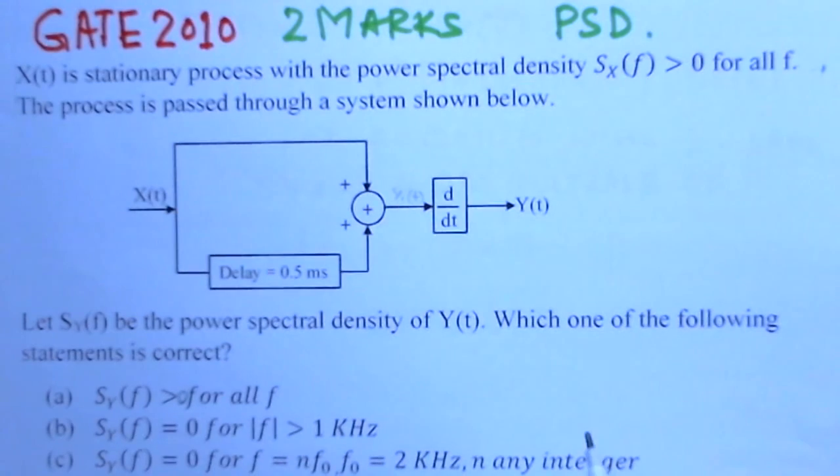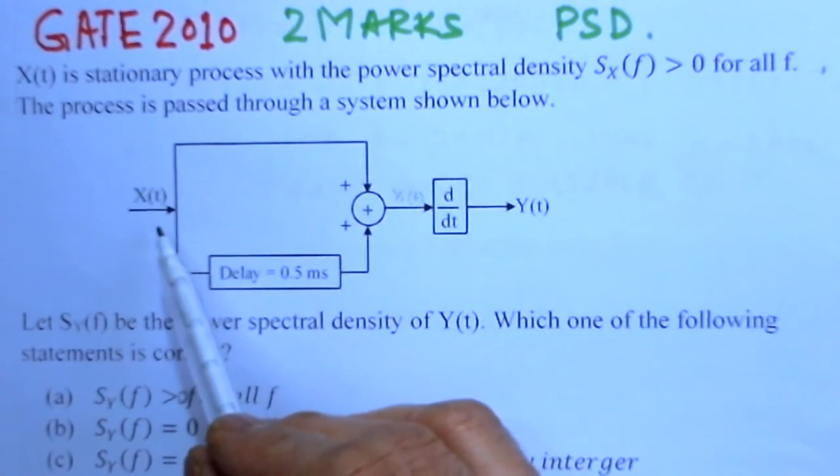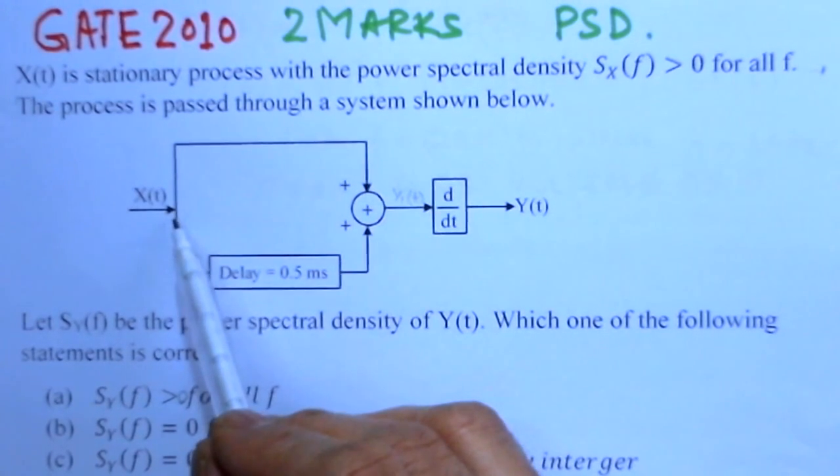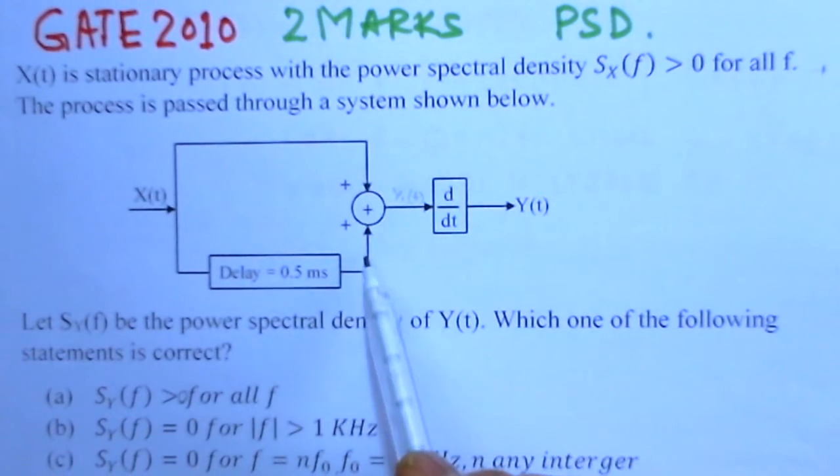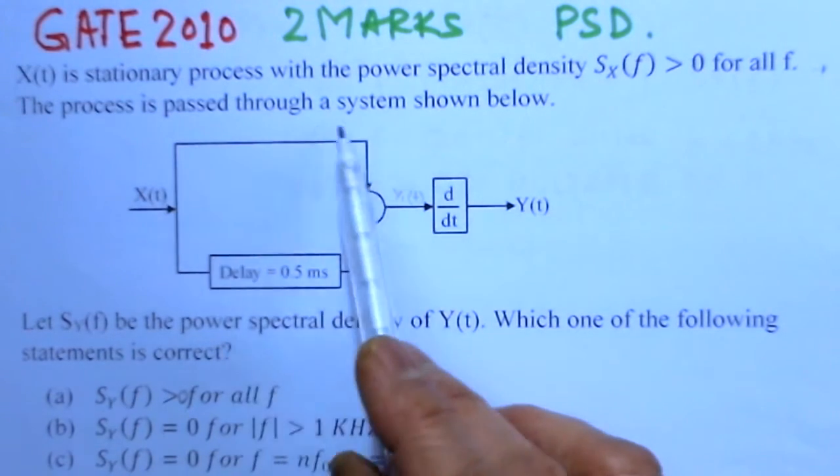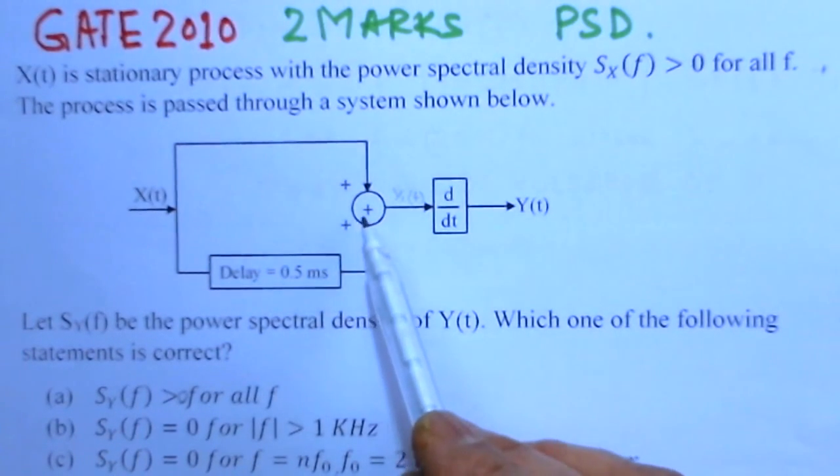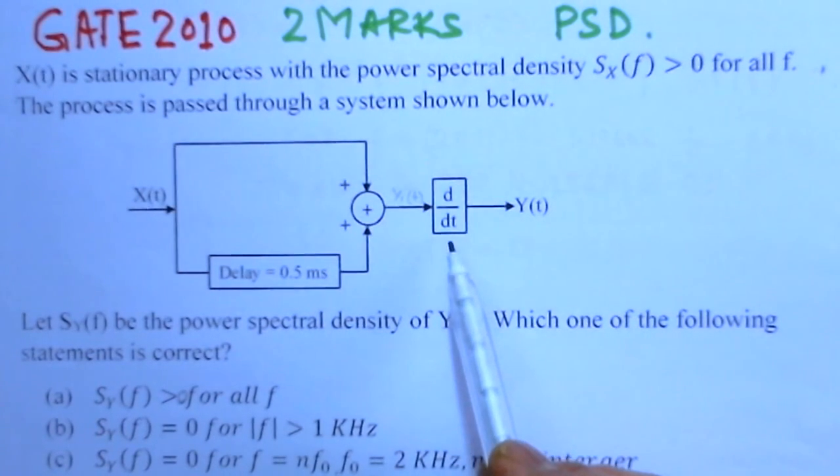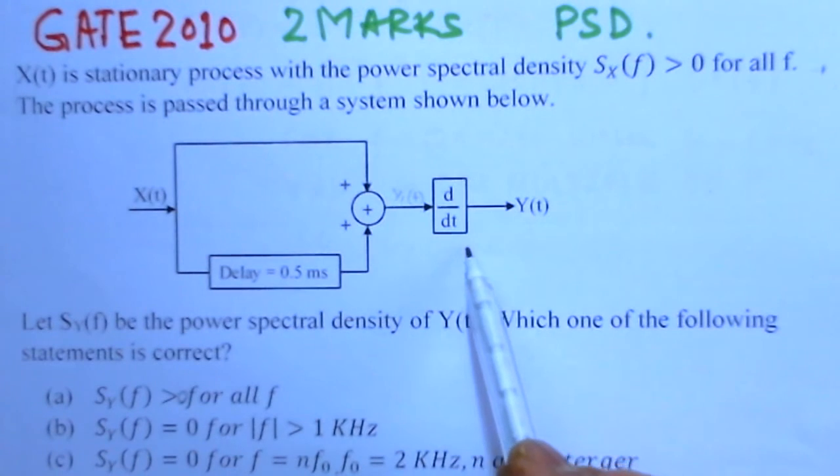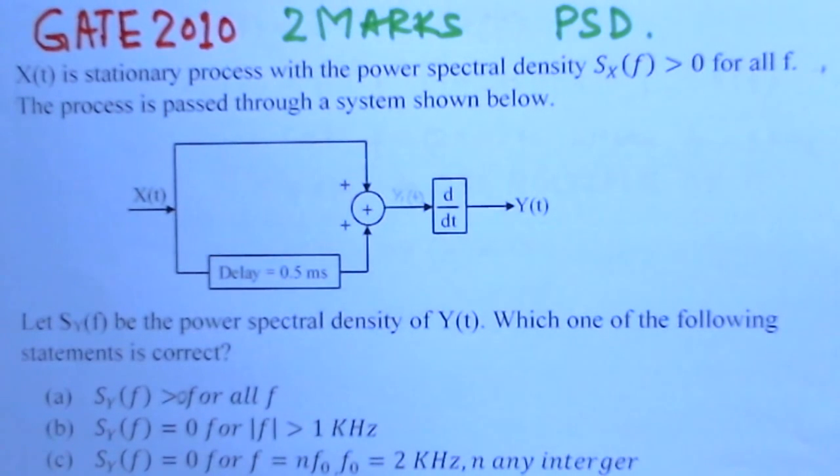So we can look into this problem. This is the process where X(t) is the stationary process which is passed through. One arm is passed through a delay of 0.5 milliseconds, the other arm is directly coming over here, and then there is an adder here giving the output, and then there is a differential operator d by dt, and then we get Y(t).